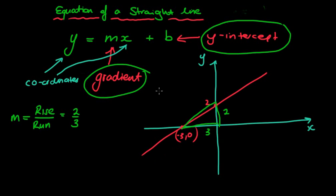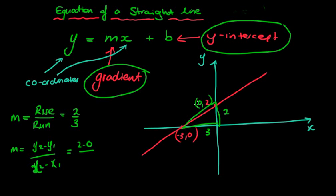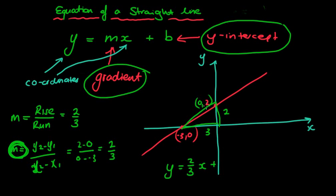You notice that the line is a positive line, so it's positive 2 over 3. Hopefully you'll know the better formula, which is our change in y values over our change in x values — or y2 minus y1 over x2 minus x1. In this case, using the points (0, 2) and (negative 3, 0), that gives 2 take away 0 over 0 take away negative 3, which gives a value of 2 over 3. So the equation is y equals 2 over 3 x plus 2, where 2 is the y-intercept. That's when you're given an actual diagram.